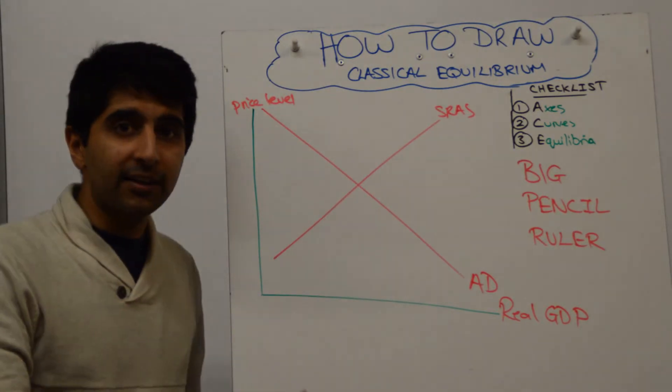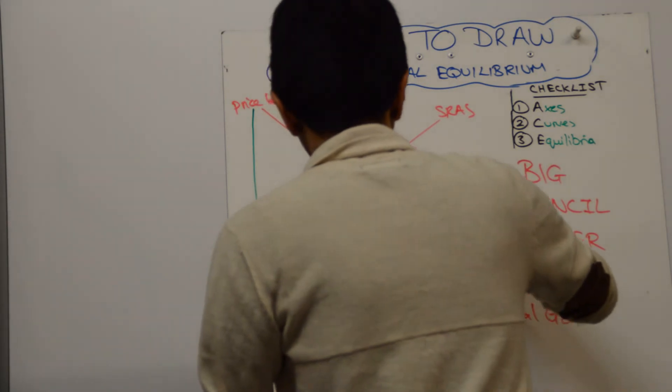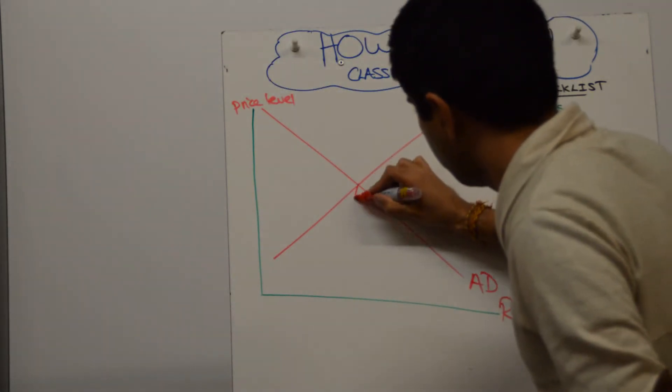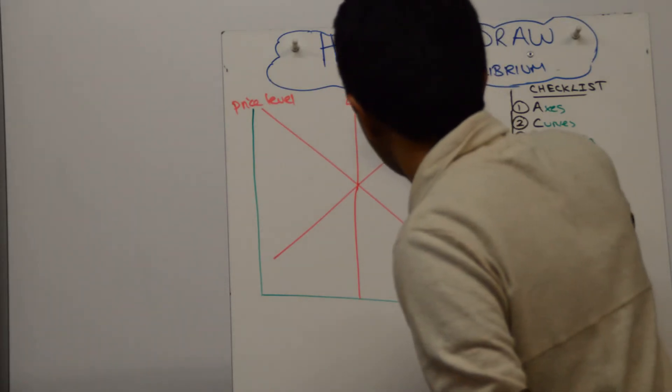And where the two intersect is where you need to draw your long-run aggregate supply. So make sure that that's done vertically, like that. Label that LRAS.